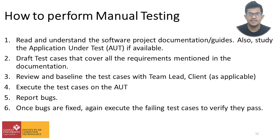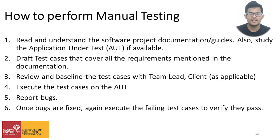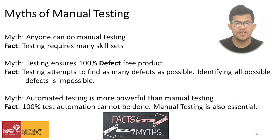As we saw the types of manual testing, let's move on to how to perform manual testing. First, read and understand the software project documentation and also study the application under test if available. Second, write rough test cases that cover all requirements mentioned in the documentation. Third, review and baseline the test cases with the team and client. Fourth, execute the test cases on the application under test. Fifth, report bugs, and sixth, once bugs are fixed, again execute the failing test cases to verify they pass.